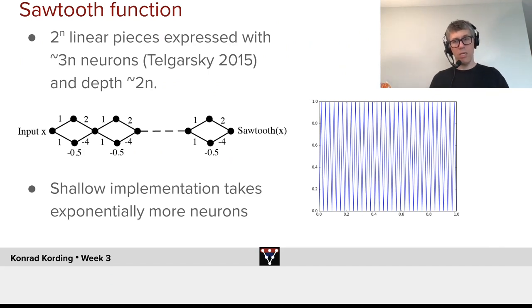So here's an interesting one. The sawtooth function. A function that just goes up and down, and up and down, and up and down. So we know that we can express 2 to the n linear pieces with just of the order of 3n neurons, which is a finding by Telgarsky, and a depth of about 2n. And you can see how it works below.